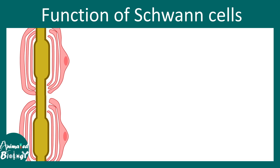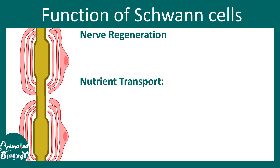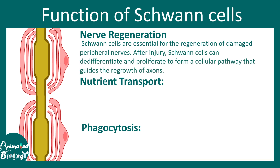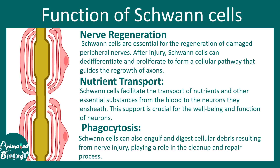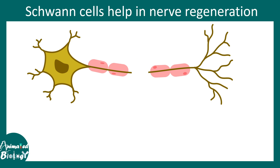Beyond myelination, Schwann cells are involved in nerve regeneration, nutrient transport, and phagocytosis. When there is a peripheral nerve injury, Schwann cells take charge to help heal the injury. They have specific transporters that allow uptake of nutrients from the blood to supply the neuron, and they can actively perform phagocytosis to clear cellular debris resulting from neuronal injury.